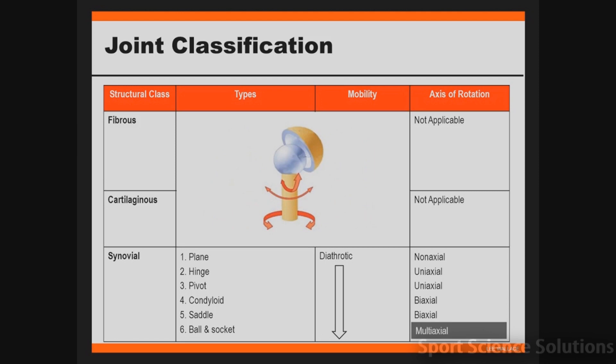The final axis of rotation is called a multiaxial joint. These joints are able to rotate on all three axes. A ball and socket joint is able to flex and extend, abduct and adduct, circumduct as a combination of these, and also rotate.